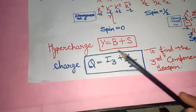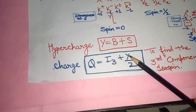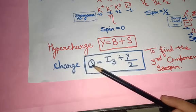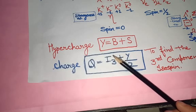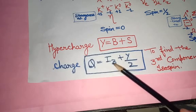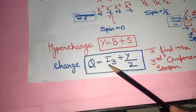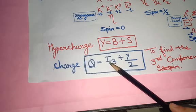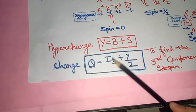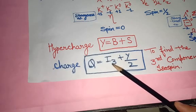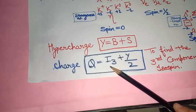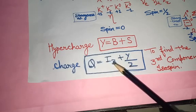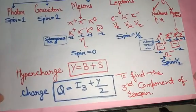The third component of isospin I3 can be found by rearranging: I3 = Q − Y/2. Why do we need the third component of isospin? We need it to know whether a given reaction is a weak reaction, a strong reaction, or an electromagnetic reaction. To determine the type of reaction, we need to check conservation of the third component of isospin. We will discuss in detail why we need I3.